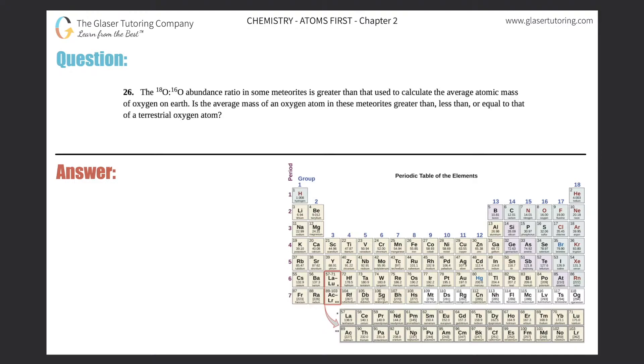Number 26. The O-18 to O-16 abundance ratio in some meteorites is greater than that used to calculate the average atomic mass of oxygen on Earth. Is the average mass of an oxygen atom in these meteorites greater than, less than, or equal to that of a terrestrial oxygen atom?